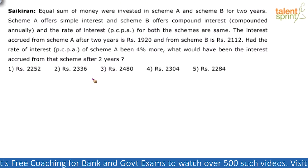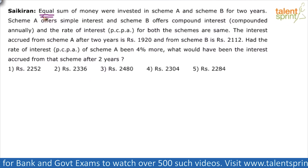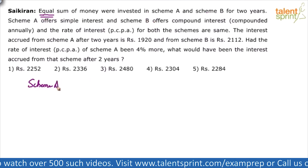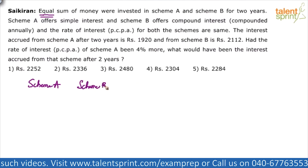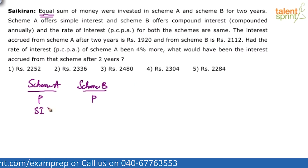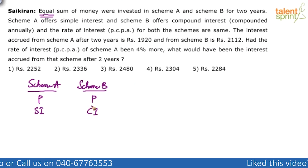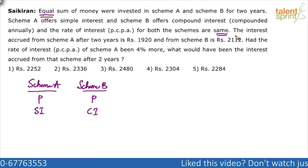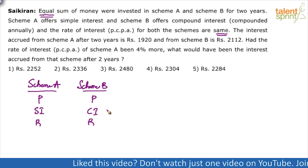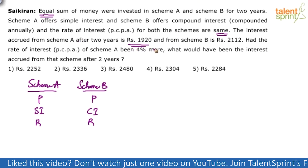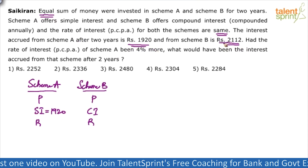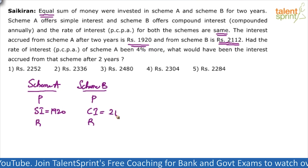Let's understand the question. Equal sum of money means the same principal amount P was invested in both Scheme A and Scheme B. Scheme A is simple interest, Scheme B is compound interest compounded annually, and the rate of interest R is the same for both. The interest accrued from Scheme A after two years is 1920, and from Scheme B — compound interest — it is 2112.